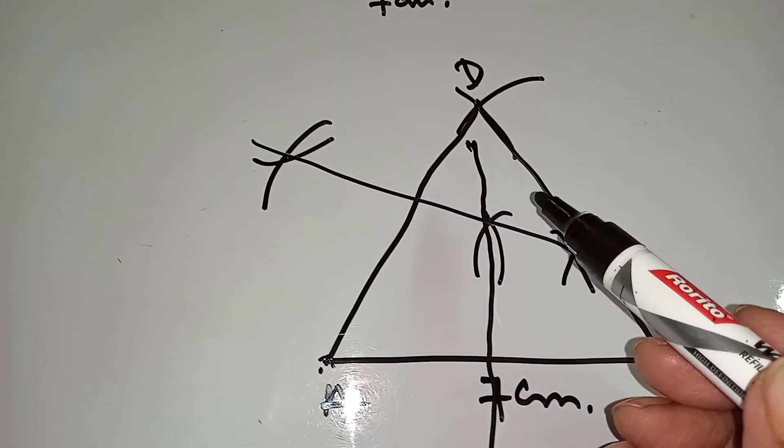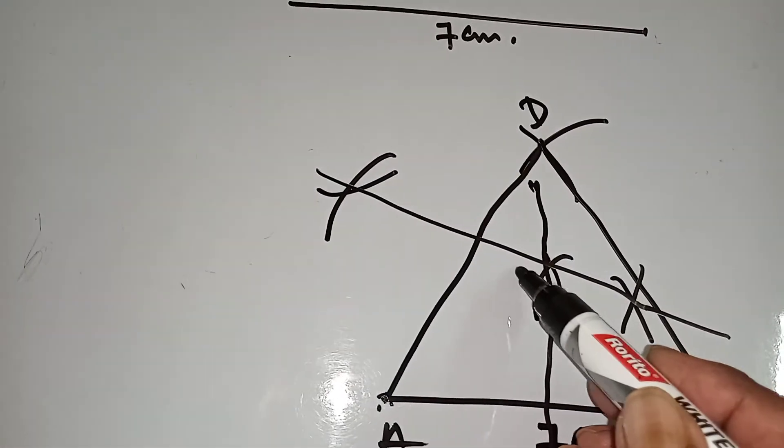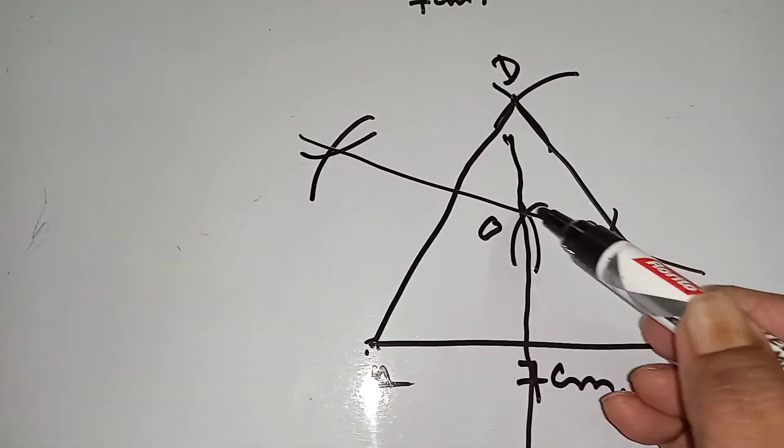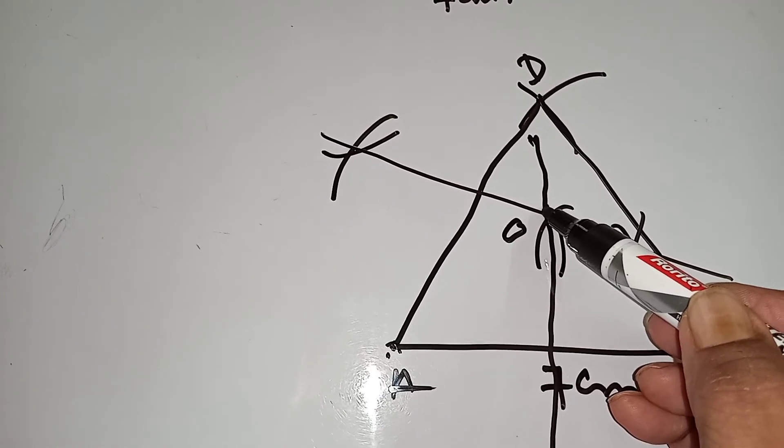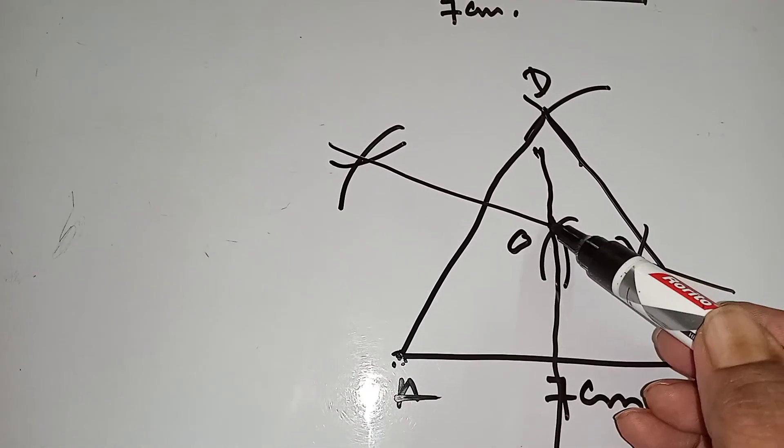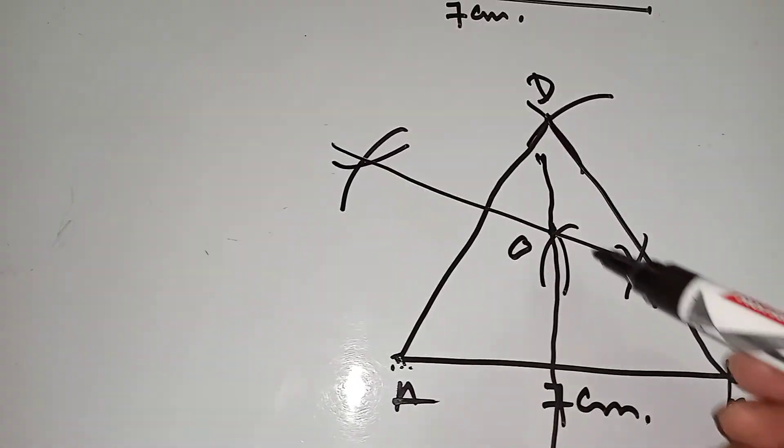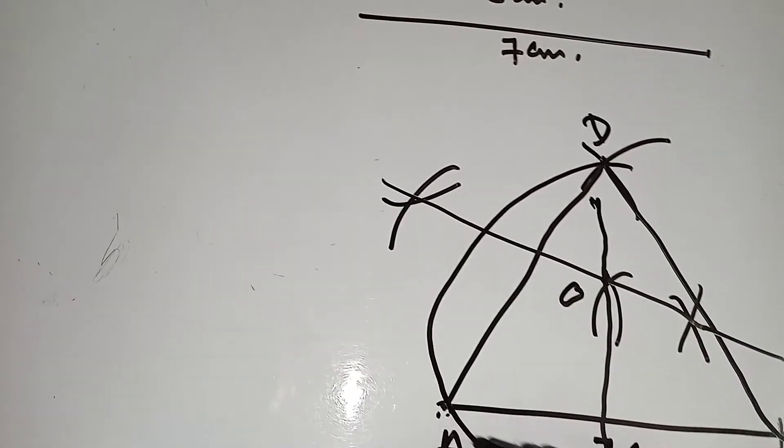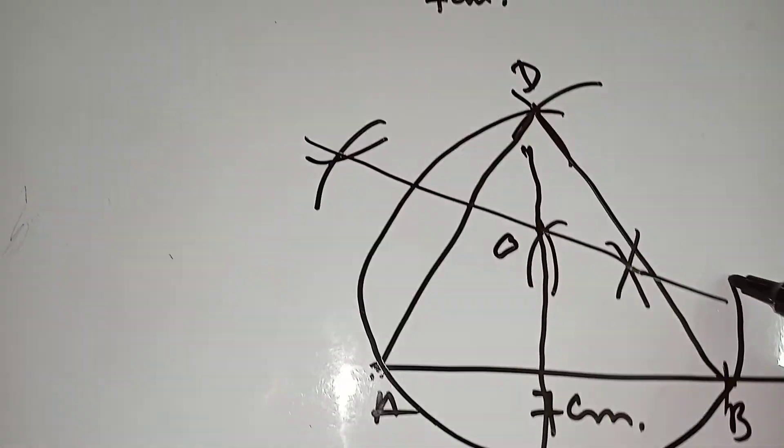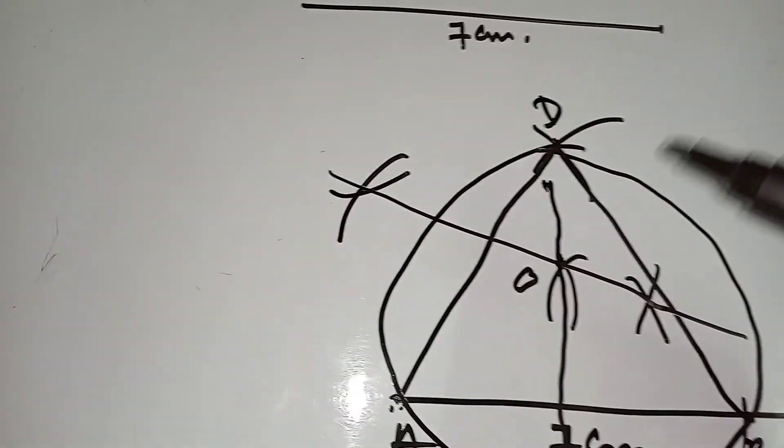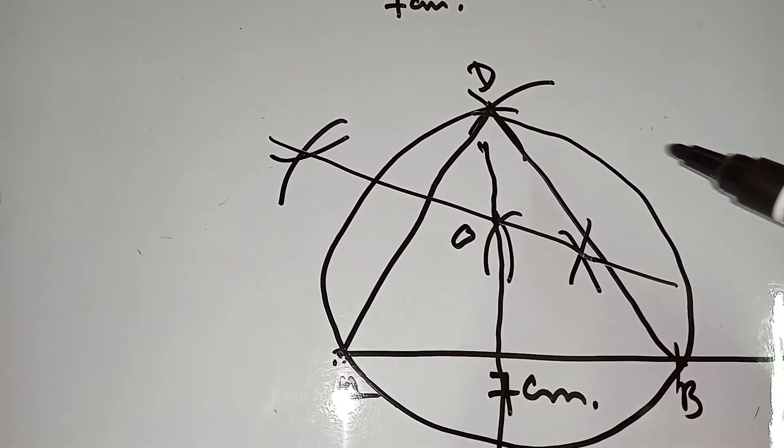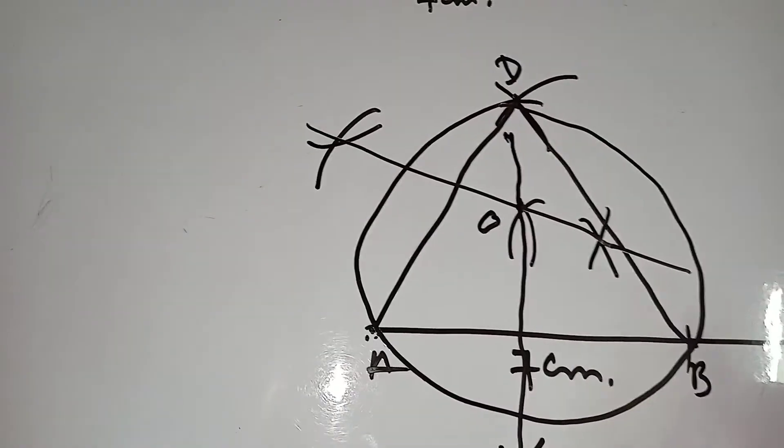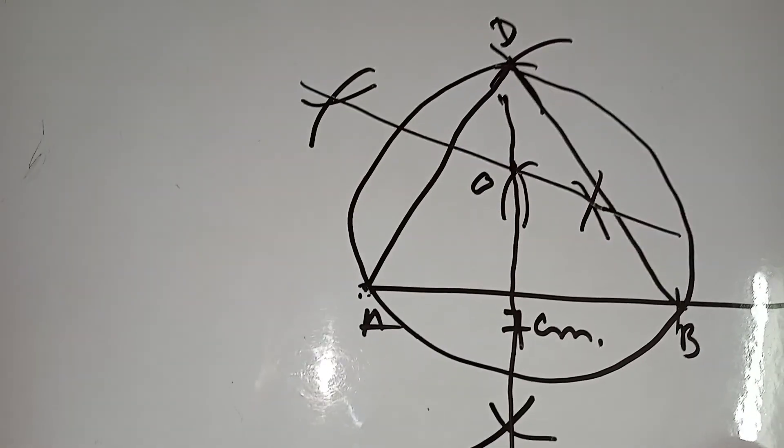These two bisectors meet at the point O. Now take this point as center and take the radius O A, O D, or O B. Put here and draw a circle which passes through A, B, D. That means this is the circumcircle of triangle A B D.